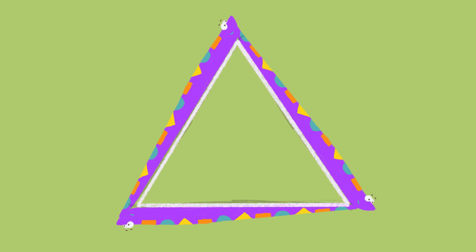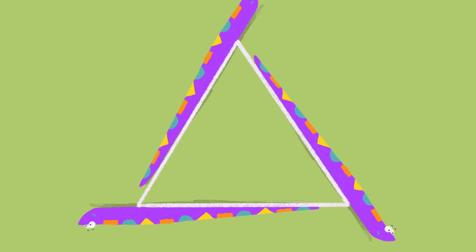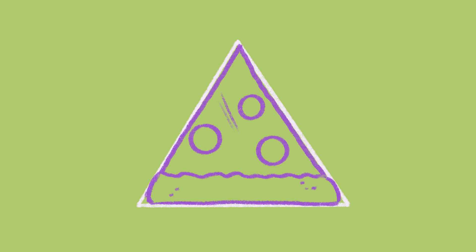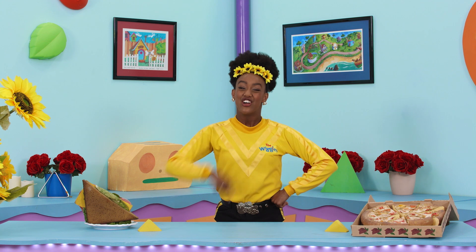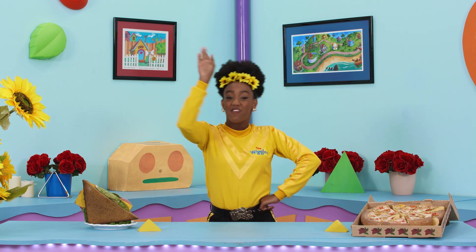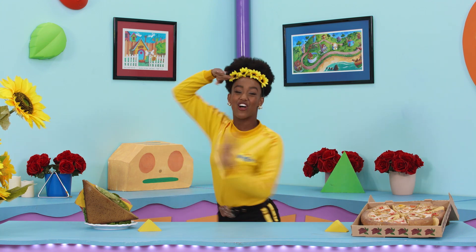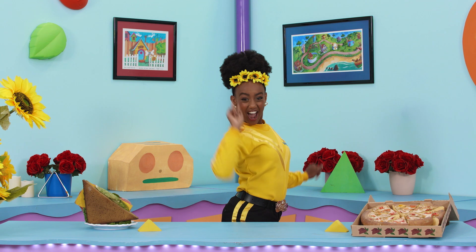Have you seen a triangle shape before? I can see a triangle shape when I eat a slice of pizza, or a slice of watermelon, or when I cut my sandwich up into four pieces. Triangles are everywhere. You can find a triangle anywhere. Just look around and see.